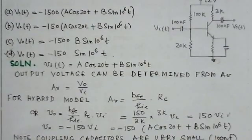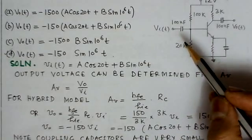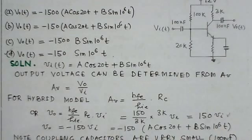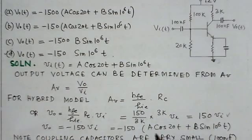Another point we can notice is this is a common emitter amplifier where there is 180 degrees phase shift between input and output. So we can write V_o = -150 V_i. V_i we can notice is the total input having two frequency components.